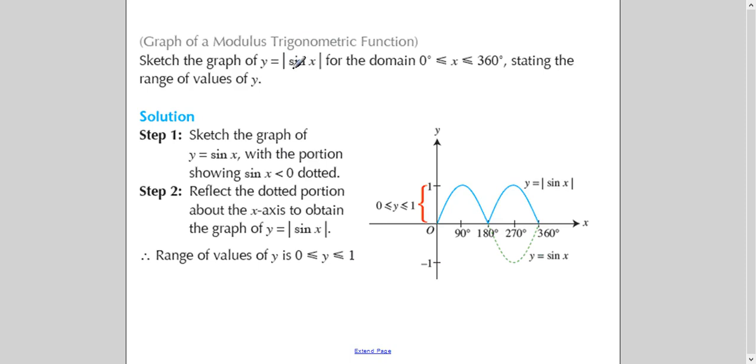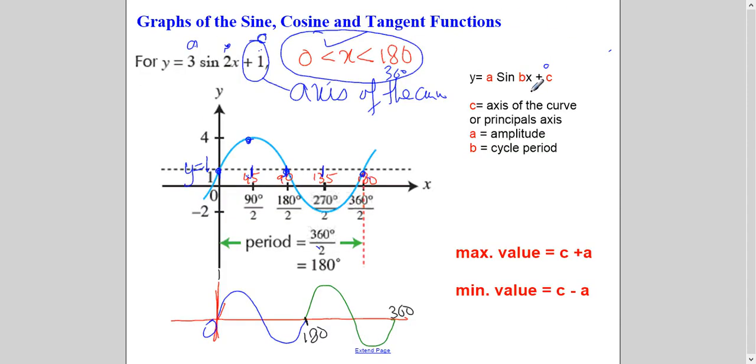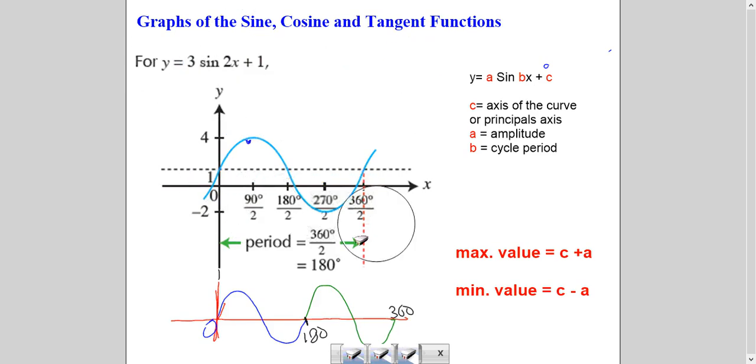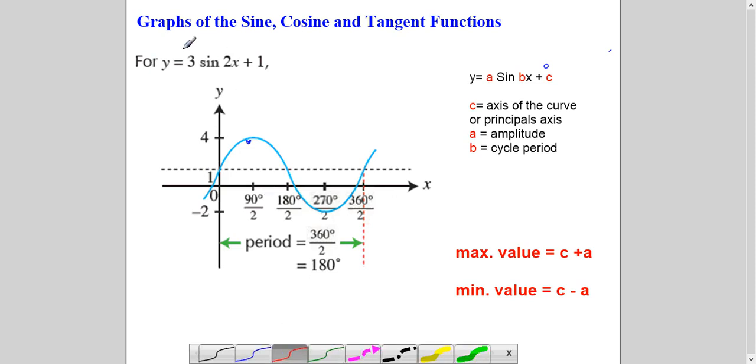So what we have learned from here. Your maximum value in this curve is C plus A. So it is this plus this. This is your C and this is your A. So C plus A gives you a maximum value and C minus A minimum value. And C, the number which is here, itself is the axis of the curve. The straight line, horizontal line, above and below which the curve will have this height. And B is your cycle period. So your cycle period for this curve is 180 degree. Because there are two cycles in 360.